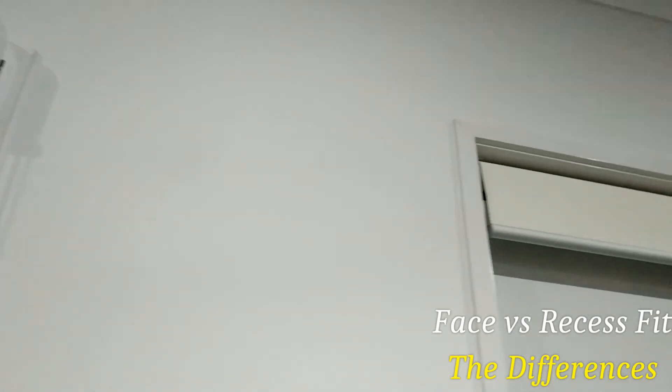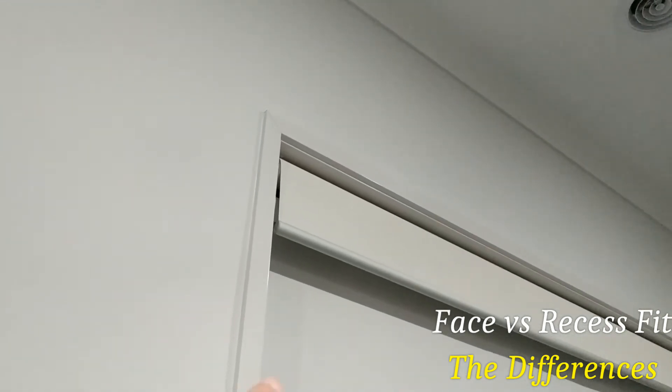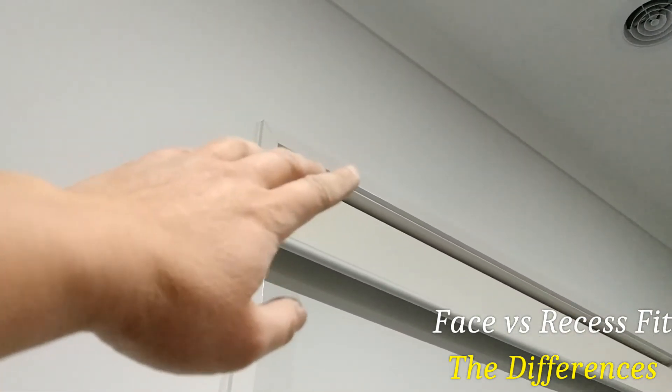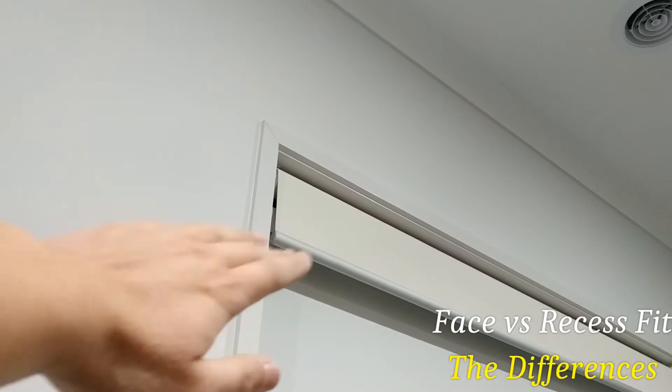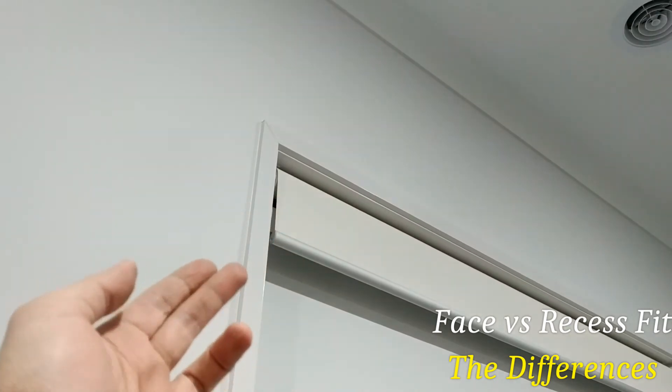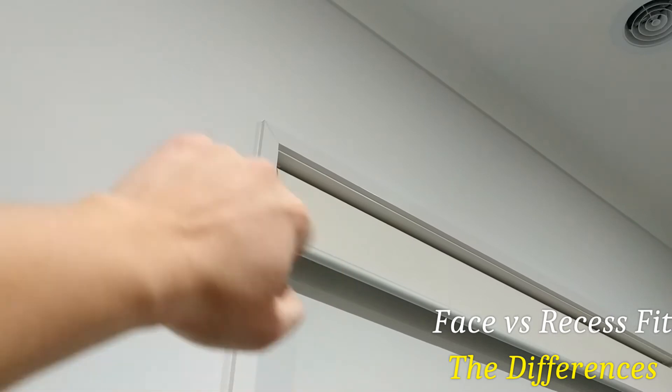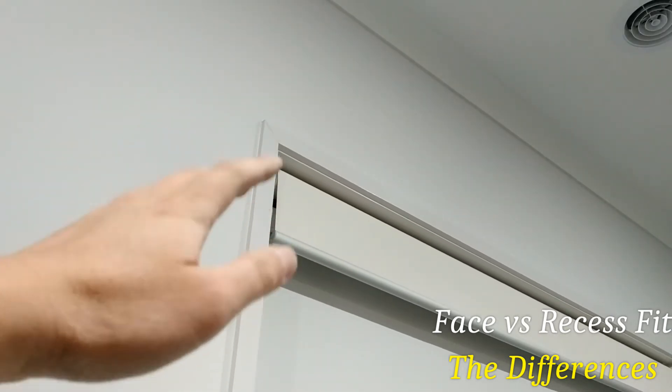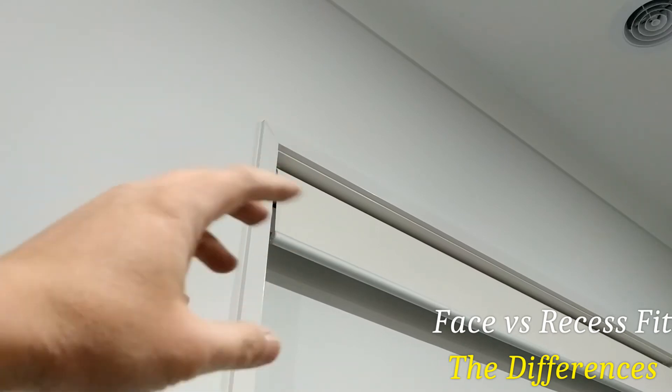But over here, you have what you call a recess mount, where it actually sits under the window frame. So it's either screwed into the bottom of the window frame or to the side of it. Now this one looks more aesthetically pleasing, but there are reasons why sometimes you can't have the recess fit.